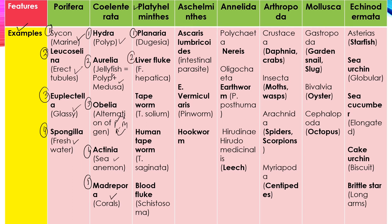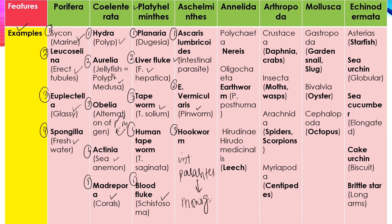Then Platyhelminthes — the first example is Planaria. Planaria is a free-living Platyhelminthes, and the rest of the forms are parasitic. Second form is liver fluke, commonly called Fasciola hepatica. Then tapeworm, called Taenia solium. Then human tapeworm called T. saginata. Then blood fluke, which is Schistosoma. For Nematoda: Ascaris lumbricoides is an intestinal parasite; second example is Enterobius vermicularis, which is pinworm. These are a large group of intestinal parasites. They are monogenetic — they complete the life cycle in a single host.